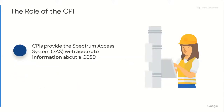The role of the CPI is critical in CBRS and with the Google SaaS. The CPI determines the installation parameters for devices who can't do it on their own, or for whom it is required. This role of the CPI is basically to ensure that that information is 100% accurate. They are the authority for the accuracy of the CBSD information.